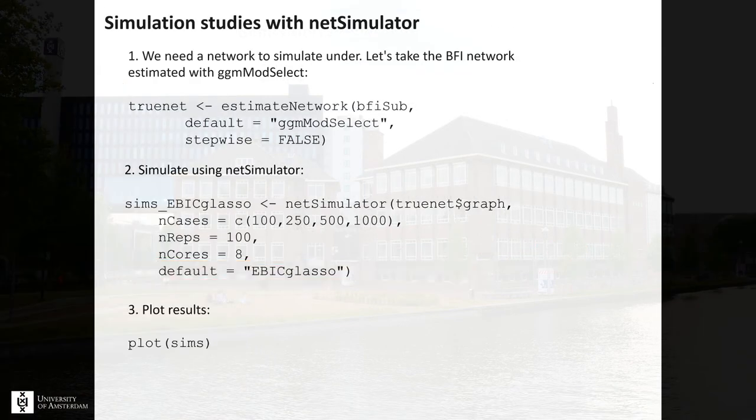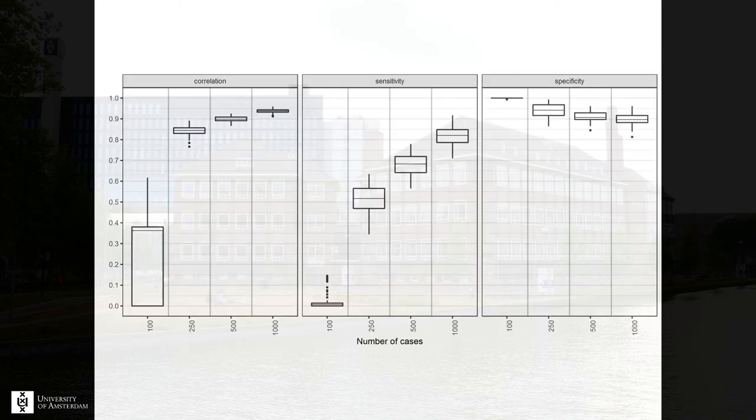Then finally, we can plot the results. The plot method has some nice functionality. If you have more conditions — for example, using the c() function or combining results with rbind from different simulation studies — you can use color and other options to distinguish between conditions.